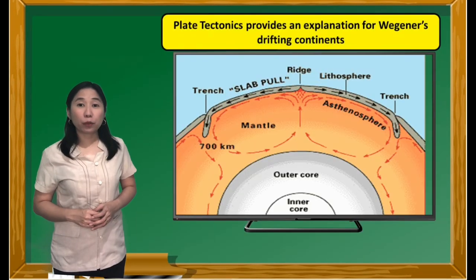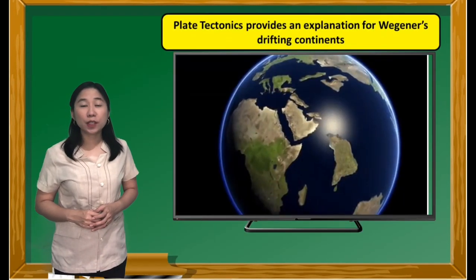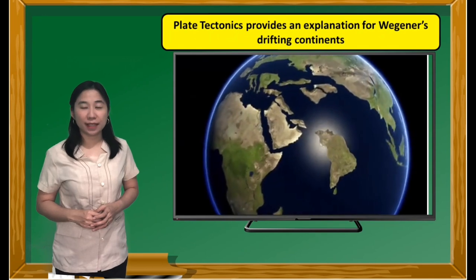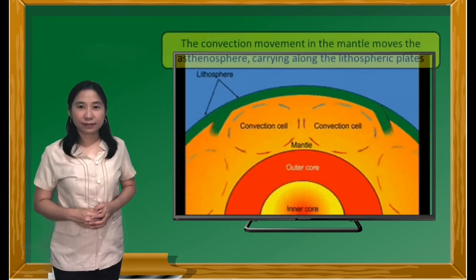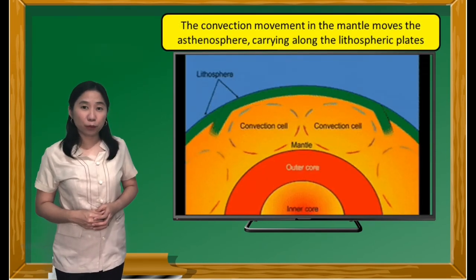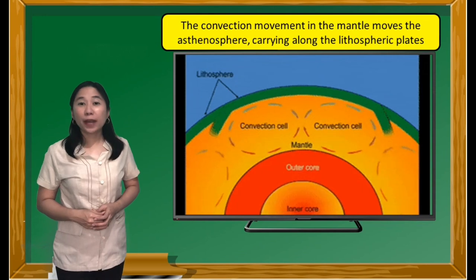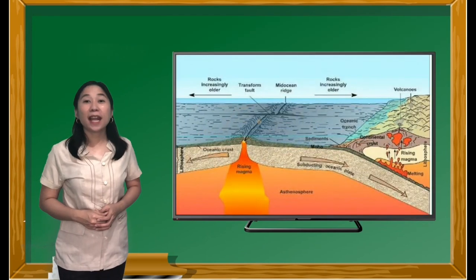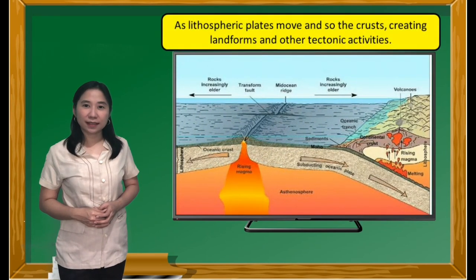Plate tectonics provides an explanation for Wegener's drifting continents. As lithospheric plates move and shape the crust, creating landforms and other tectonic activities.